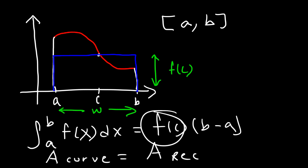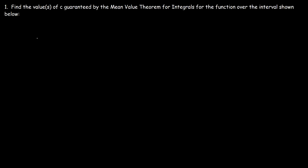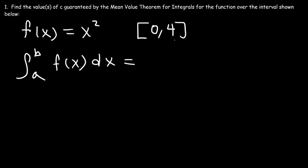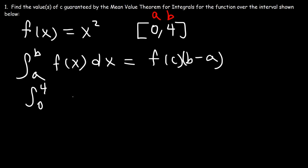So at some point C, the area of the rectangle equals the area under the curve, and f(C) represents the average value. Now let's say f(x) equals x squared over the interval 0 to 4. Find the value of C guaranteed by the mean value theorem for integrals. We start with the formula: the area under the curve equals the area of the rectangle, f(C) times (B minus A). A is 0 and B is 4, so we have the integral from 0 to 4 of x squared.